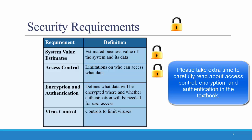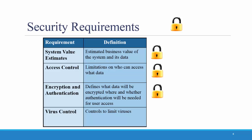The third category is encryption and authentication, which defines what data will be encrypted and whether authentication will be needed for user access. An example could be: Data will be encrypted from the user's computer to the website to provide secure ordering. Finally, virus control involves specific steps to control the potential impact of viruses on the computers. An example could be: All uploaded files will be checked for viruses before being saved in our system.